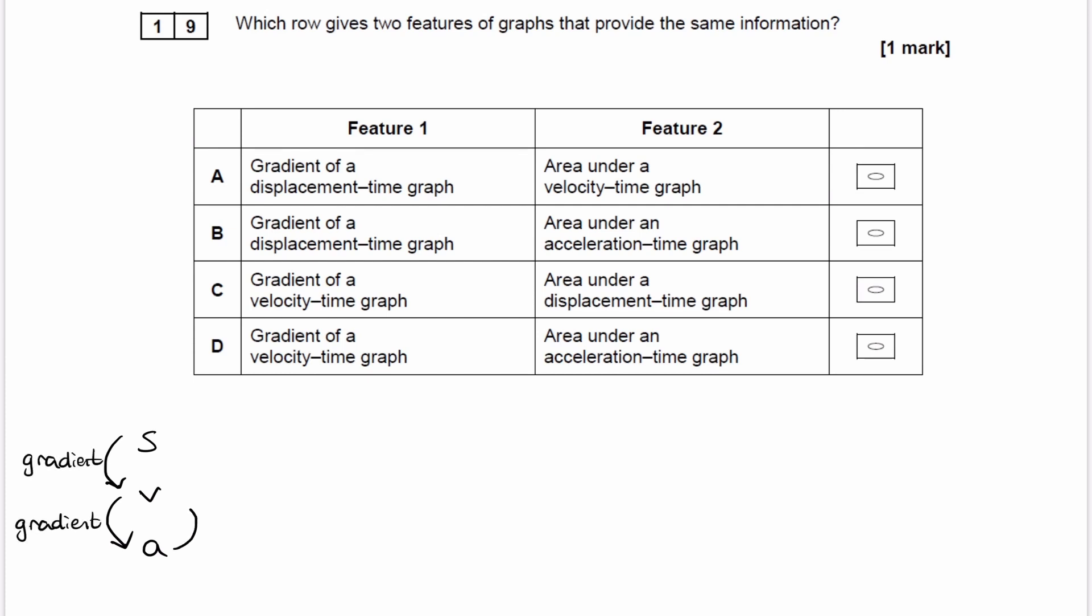To go from acceleration to velocity, and then velocity to displacement—to go back up—we have to find the area underneath the graph.